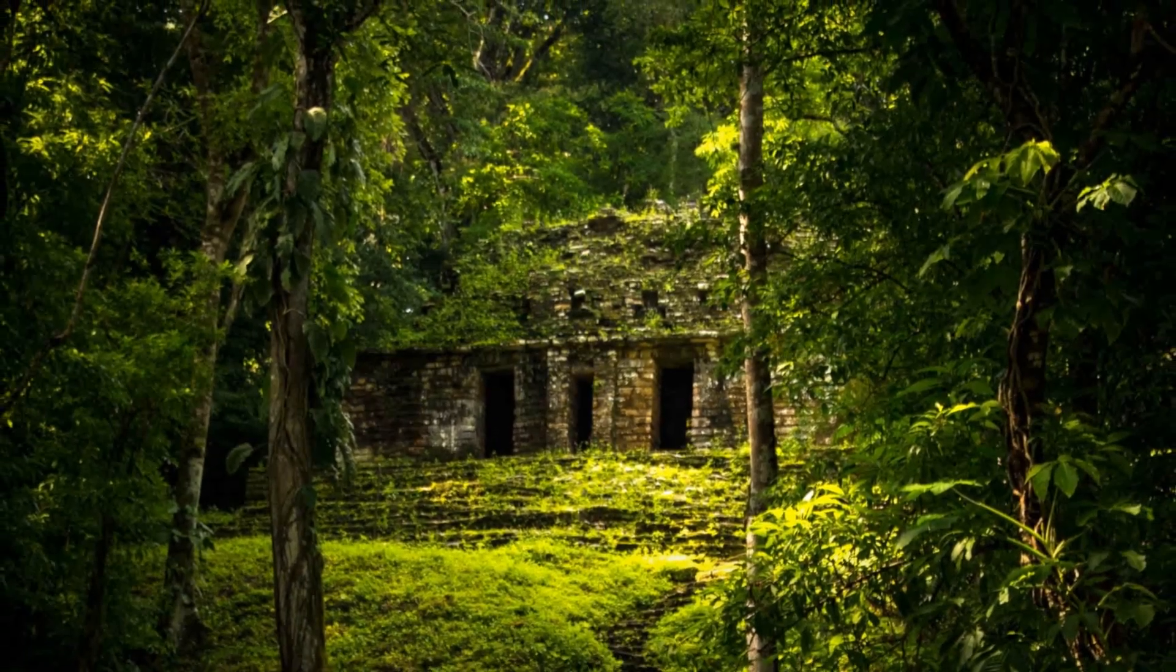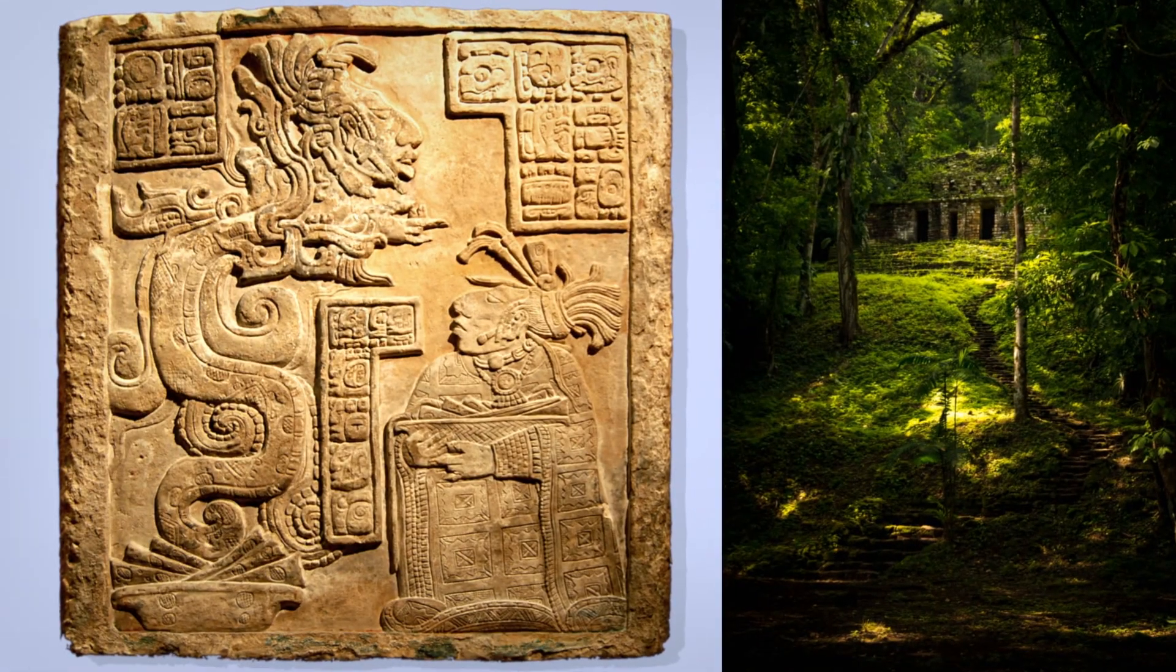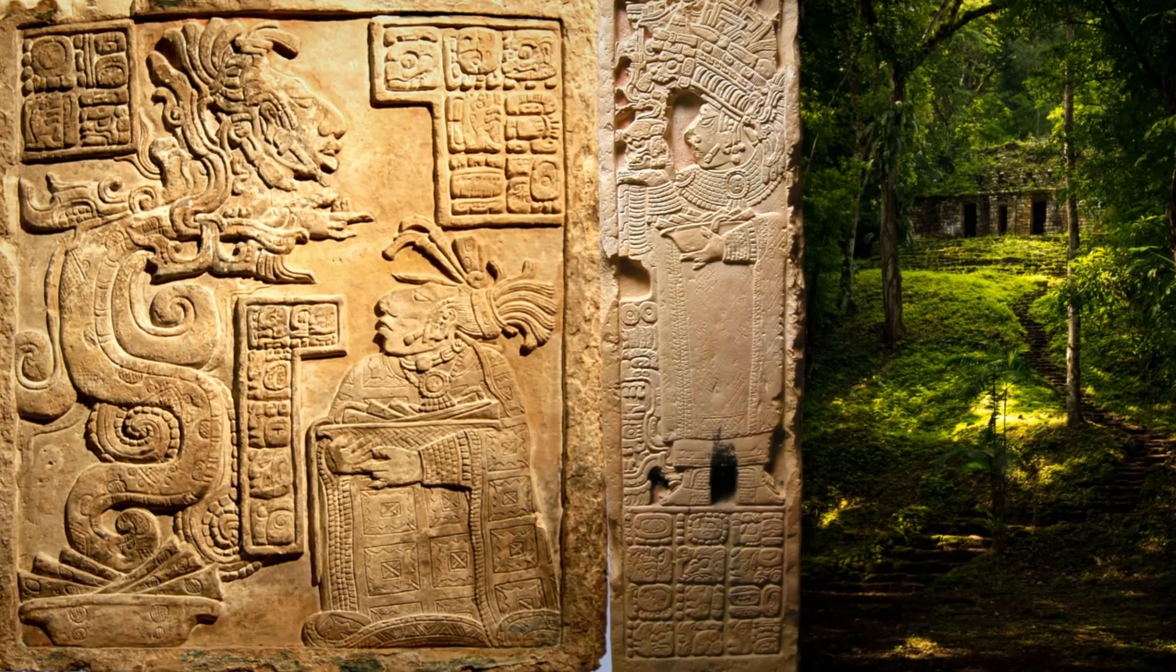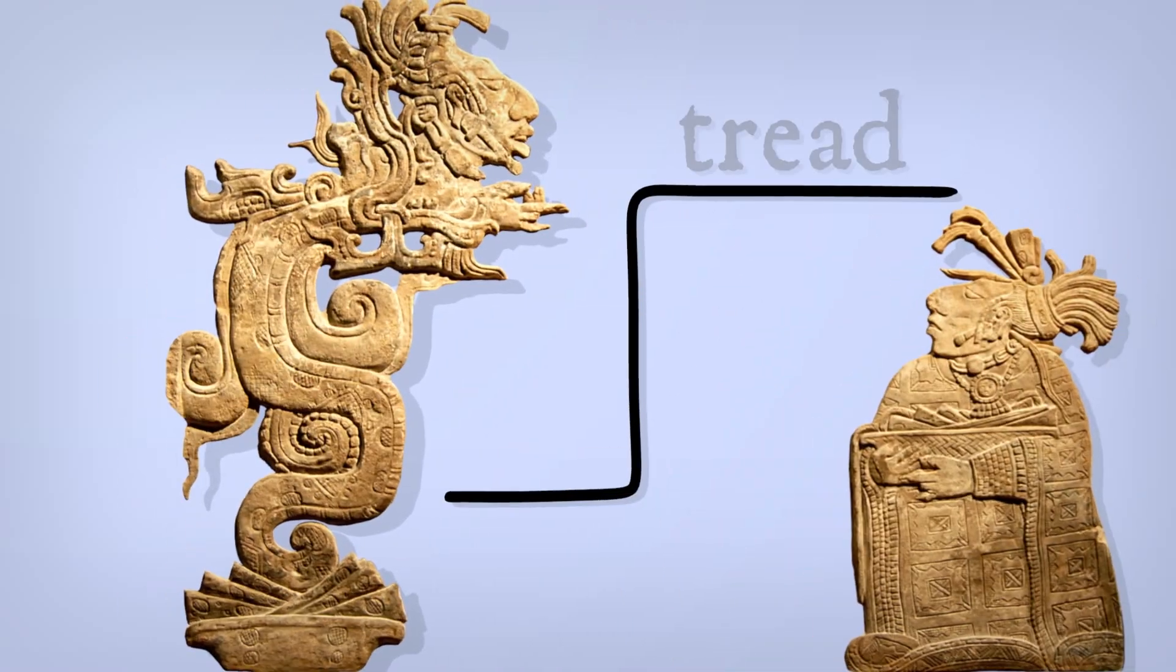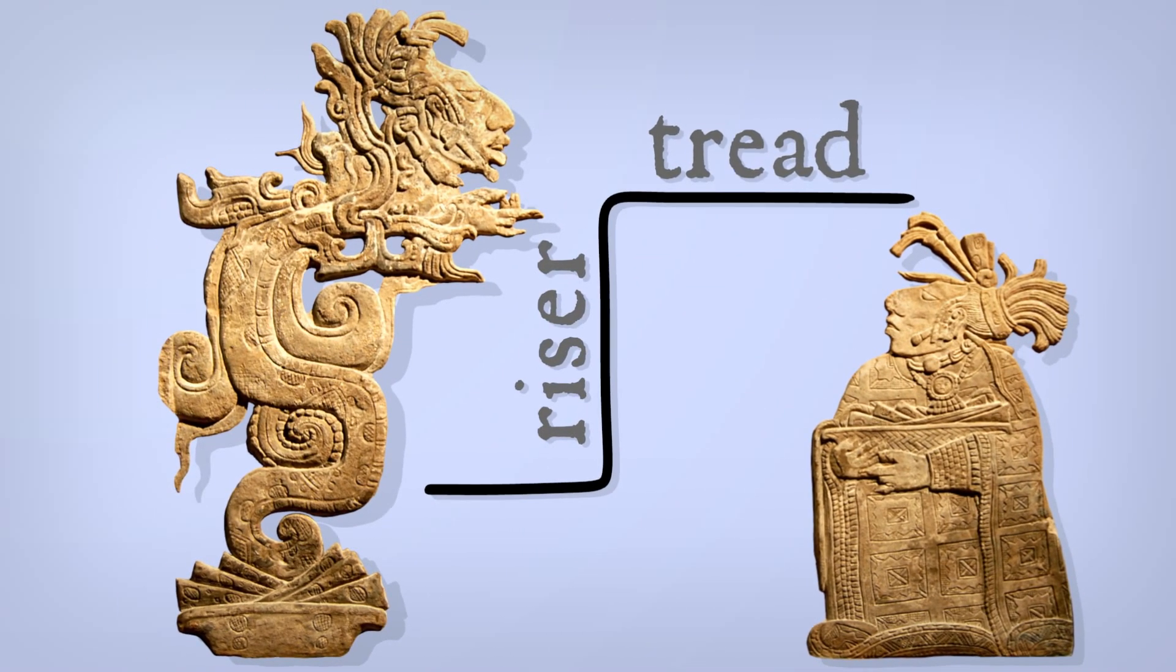The structures here abounded with inscriptions. Above doorways, lintels with glyphs. Facing the buildings, stele with glyphs. Even stairways leading up to the buildings were carved on the tread and on the riser. In front of structure 44 is stairway 3.